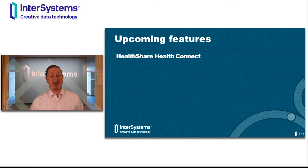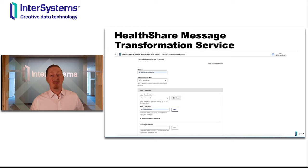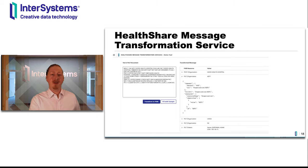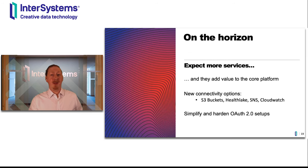That was quite a bit of content we've covered so far. Let's take a look at some of the projects that we are working on today and that may see the light of day in future releases. The HealthShare Message Transformation Service is a new service you will hear more about during this conference. It allows you to consume HL7v2 messages from an S3 bucket, for example, and then transform them into corresponding FHIR resources, as you can see on the screen here. This leverages quite a bit of the technology we covered so far in this session, but you don't have to take care of the underlying infrastructure — it's all set up for you.